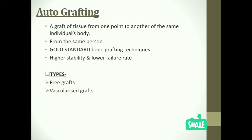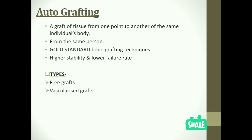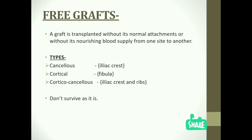Autografting is subcategorized into two categories: free graft and vascularized graft. In a free graft, the graft is transplanted without its normal attachment or without its nourishing blood supply — these grafts are taken without their blood supply and placed at another site.